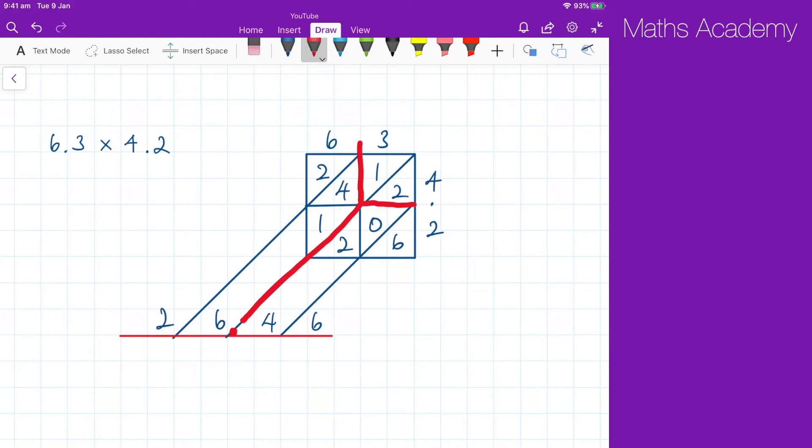Now, obviously, we're not limited to a 2 by 2 grid. It could be a 3 by 2, 3 by 3, 4 by 2, etc. Just a case of drawing the grid and then doing the multiplication.